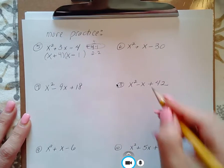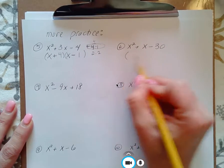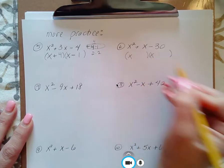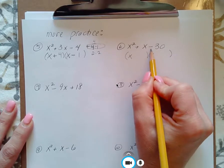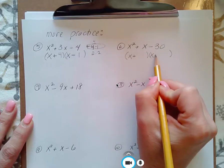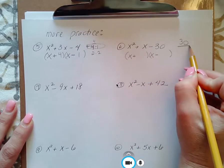Number six. So I move over here and set myself up. Two sets of parentheses, x and x. I'm multiplying to get a negative, so I know I have one of each sign. And I'm multiplying to get 30.